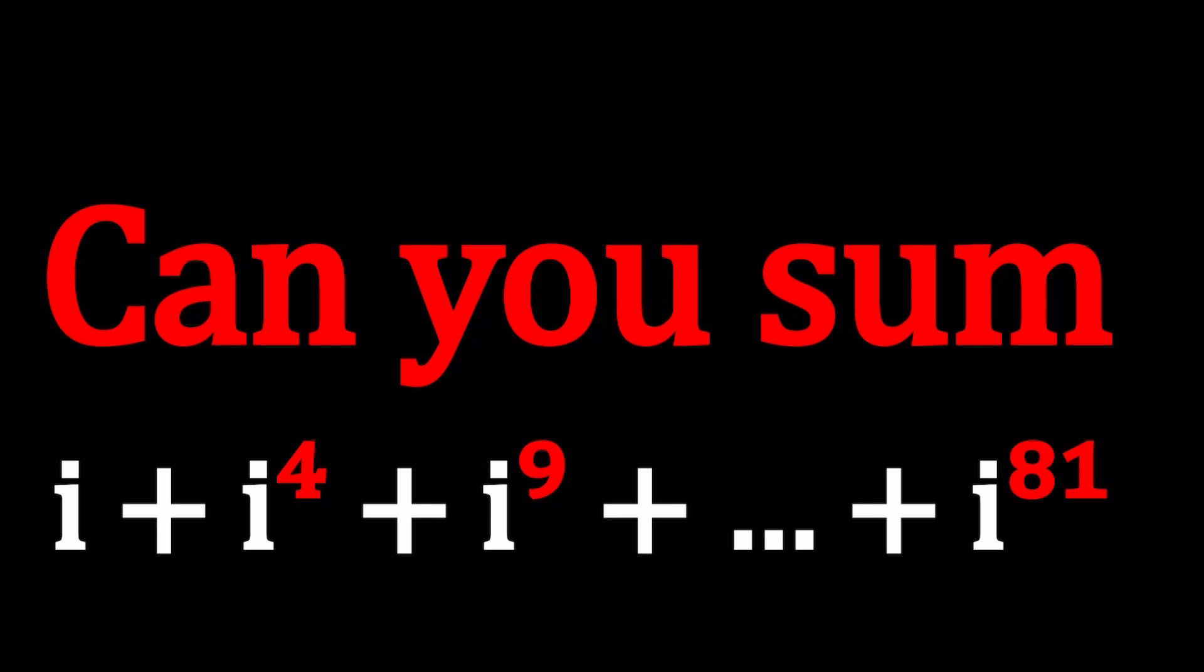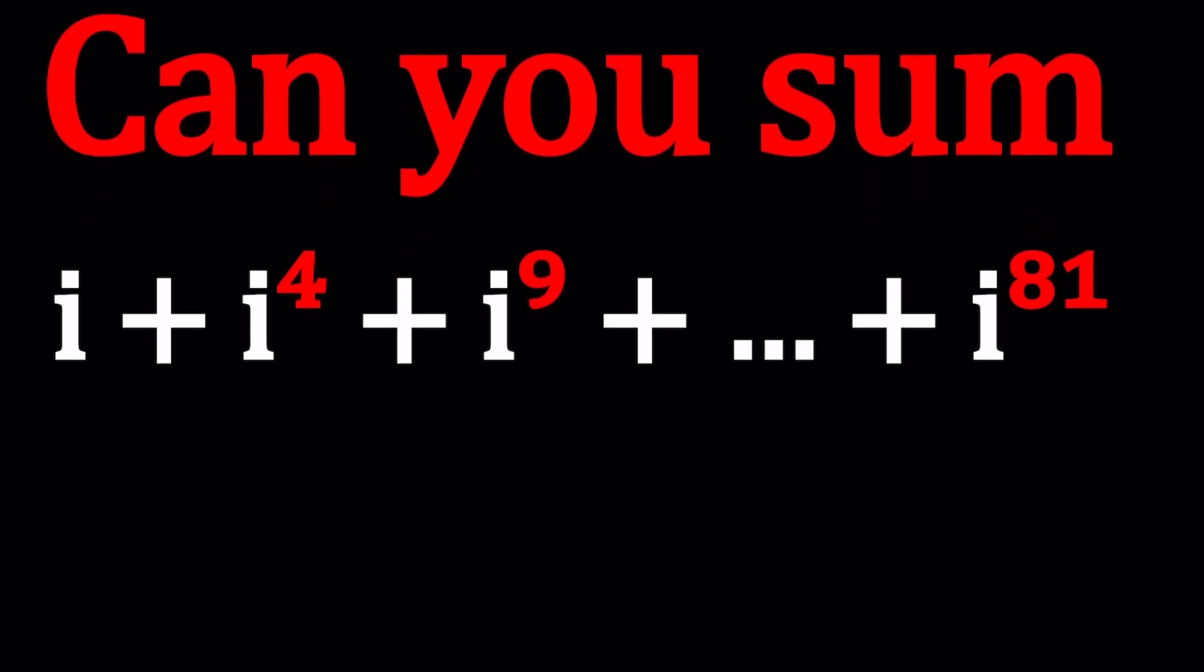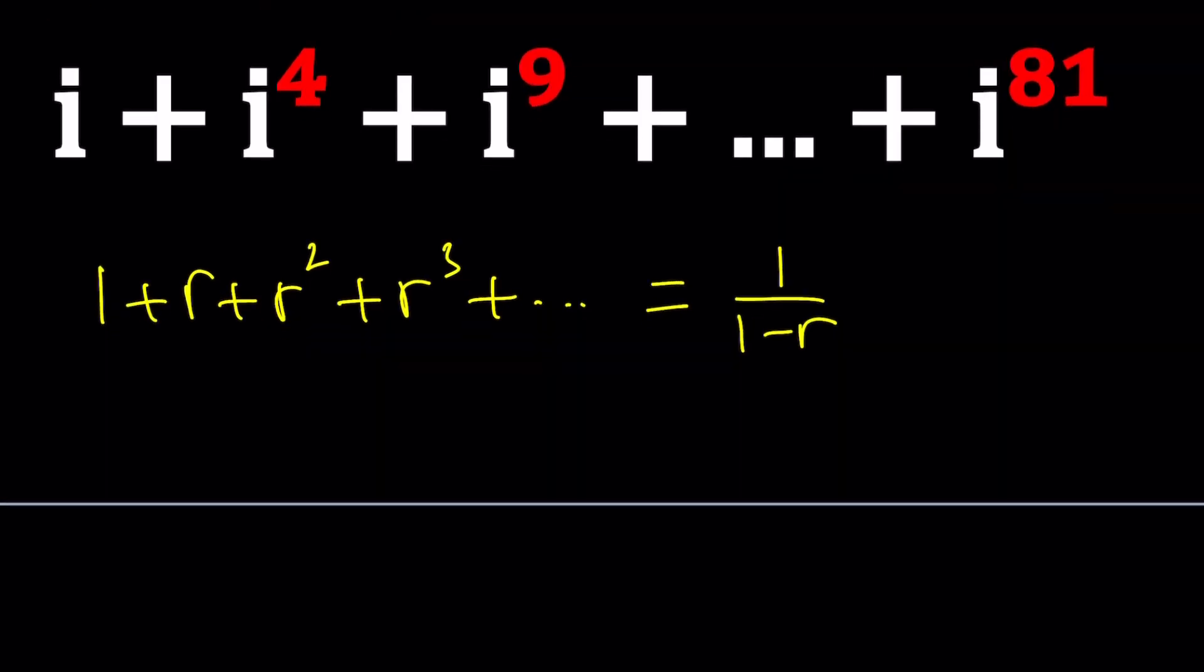Now before we start simplifying this expression I'm going to go ahead and turn this into somewhat looking maybe geometric sum or a series. Remember geometric series that looks like 1 plus r plus r squared plus r cubed and so on and so forth. And when this sum converges we can evaluate it with 1 over 1 minus r. And of course in order for this to converge r needs to be between negative 1 and 1. And when r is equal to 0 we get 1 on both sides. Make sense? Great.